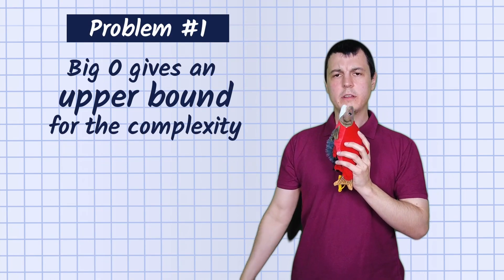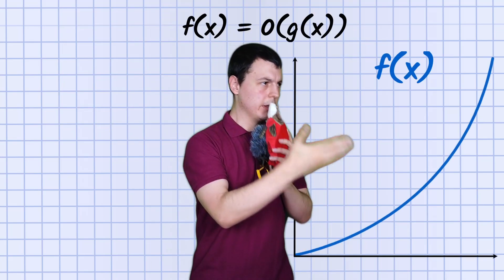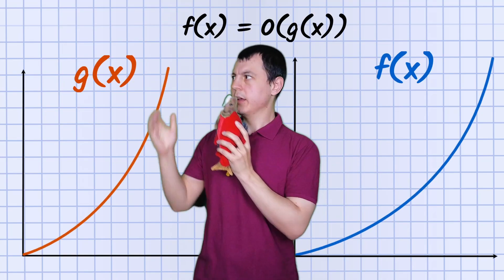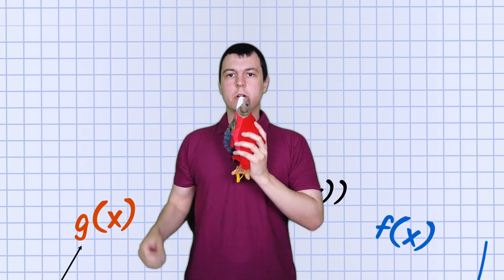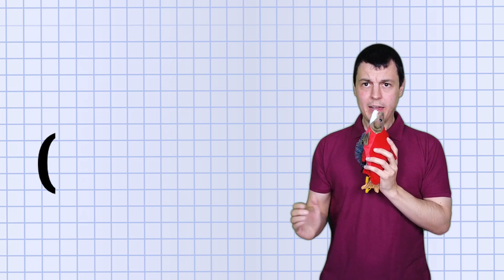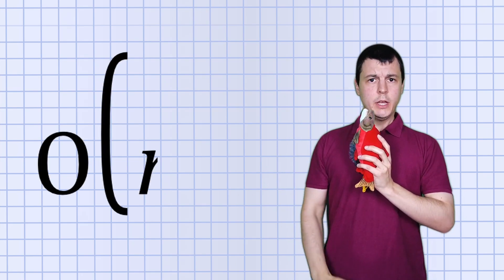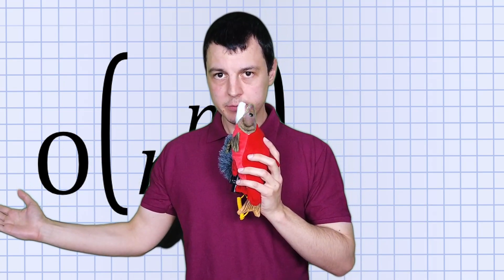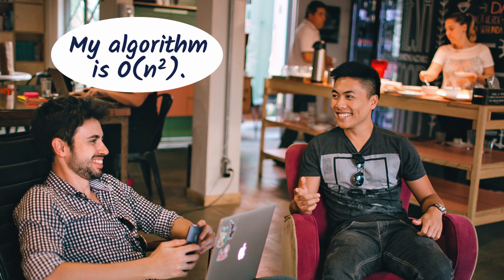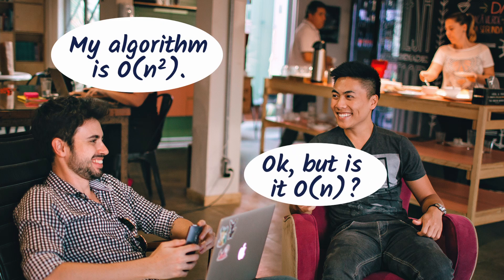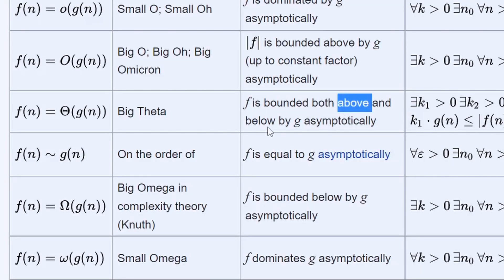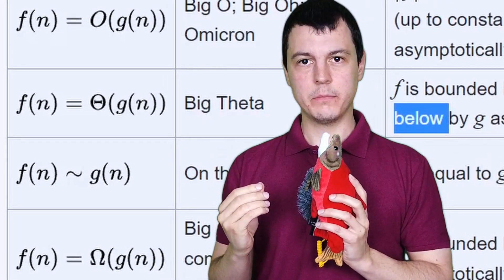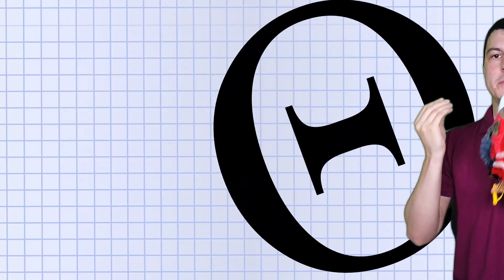The first problem is it is just an upper bound. It only says this thing does not scale worse than that thing. I can give you a valid Big O estimation for everything you will ever come across — it's very likely to be Big O of N to the power of N to the power of N. It's probably much better, but who knows. But when I say this algorithm runs in O of N squared, you would not expect it to also run in O of N. So what you want to use is Big O's sister, Big Theta, because everyone loves Big Theta.